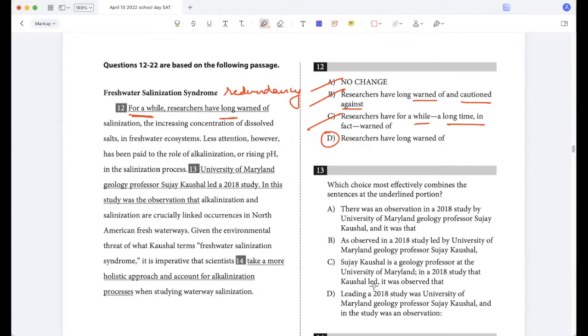Sujay Kaushal is a geology professor at the University of Maryland. In a 2018 study that he led, it was observed that. Leading a 2018 study was University of Maryland geology professor Kaushal, and in the study was an observation. So here the most concise way to put them together and convey the meaning is B, because I'm talking about the problem of alkalinization here, and then I'm saying as observed in a study led by University of Maryland professor, alkalinization and salinization are crucially linked occurrences in freshwaterways.